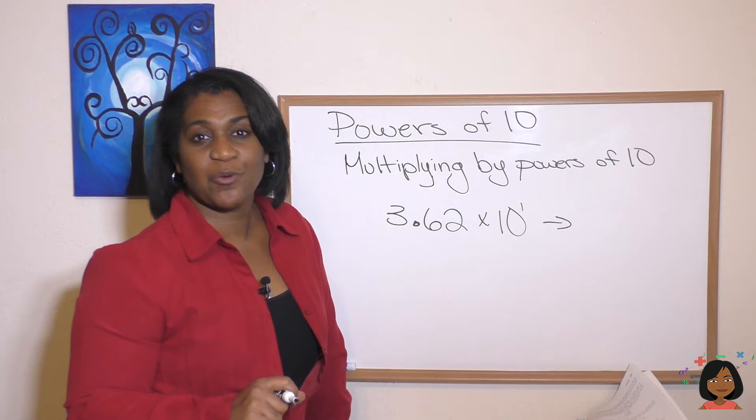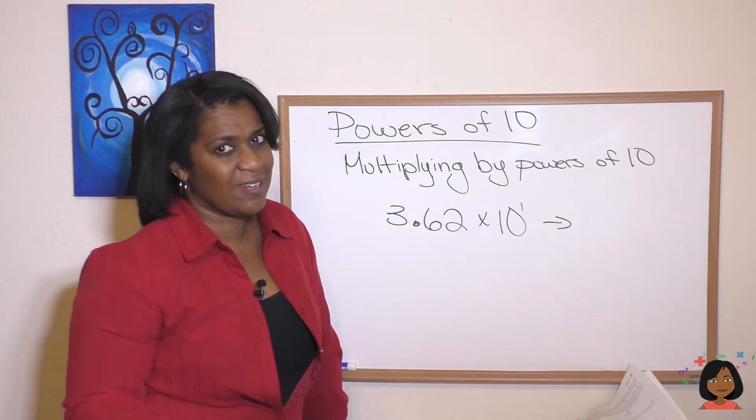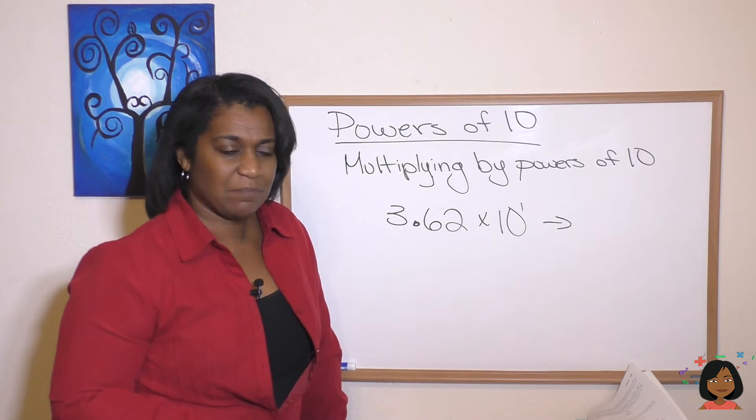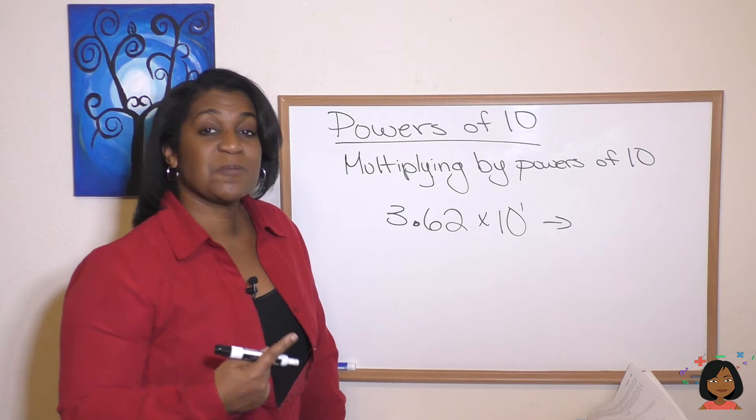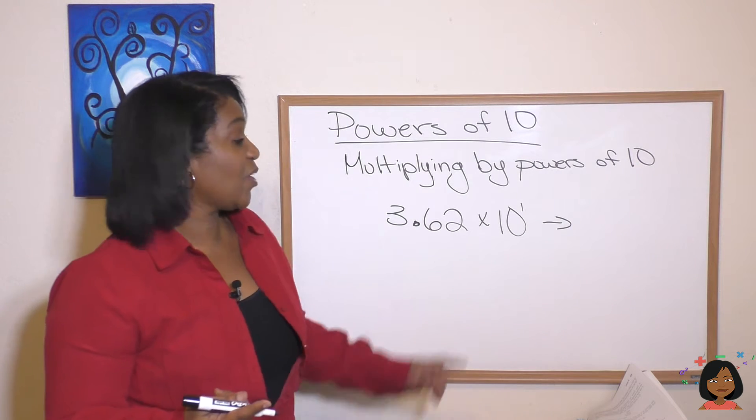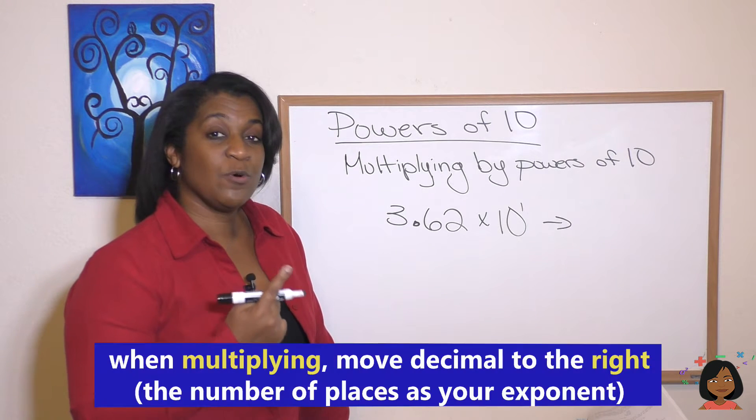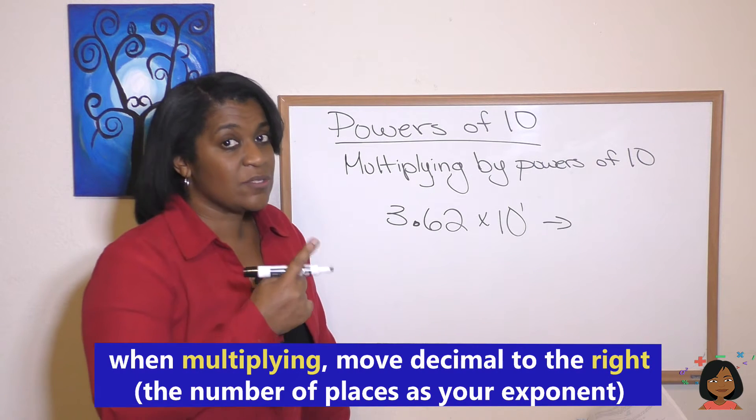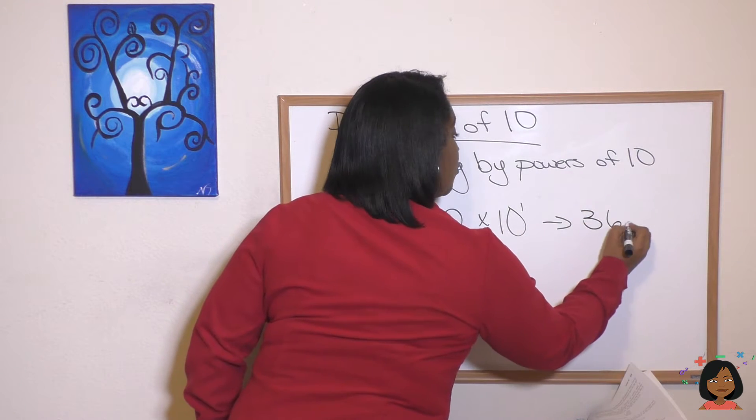Here's the last two things I want to show you. What happens when we multiply and divide by powers of 10? Let's first start with multiplying. Here I have a number, 3.62, and I'm going to multiply it by 10 to the first. So we've got 1, 0 in 10 to the first, and we're going to move our decimal point 1 to the right. Think about it. It'll be 36.2.